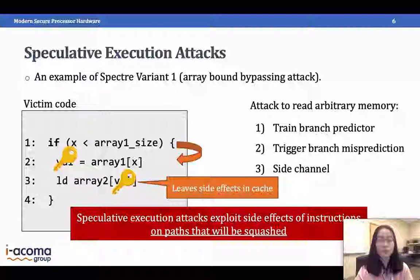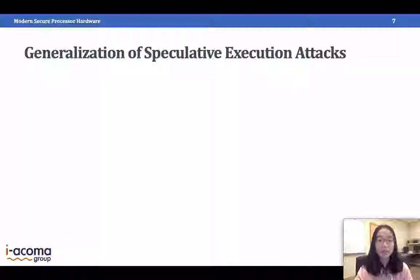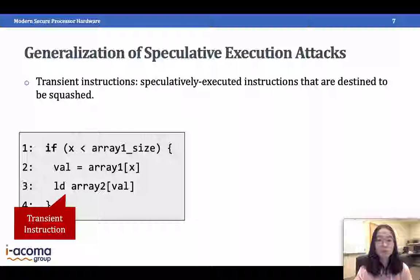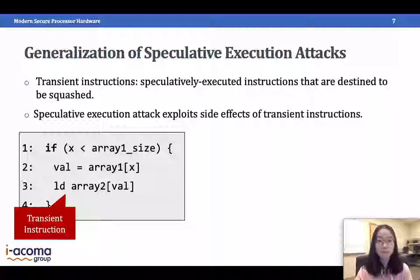In the third step, the attacker uses cache-based side-channel attacks to figure out what address was accessed by the victim, and that address reveals the secret value. From this example, we can note that speculative execution attacks exploit the side effects of instructions on paths that will be squashed. This makes them very difficult to defend against because squashed instructions cannot be reasoned about by programmers and compilers.